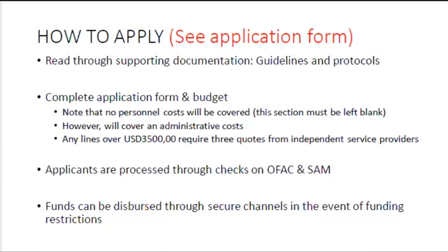In some countries, civil society organizations are not permitted to receive funds from international actors — for example, in Egypt that is illegal and punishable. In such cases, we encourage organizations to identify an individual or partner who can receive funds on their behalf. We can also, through our network, identify partners to receive funds on your behalf. Importantly, there must be an individual — such as your executive director or movement leader — who can give surety and provide financial and narrative reporting.